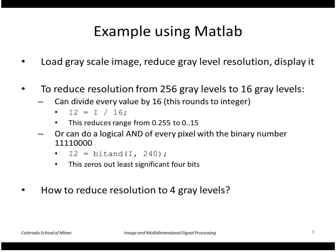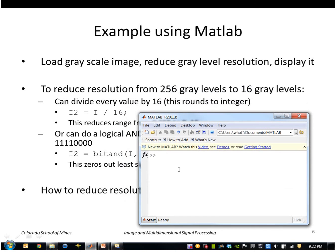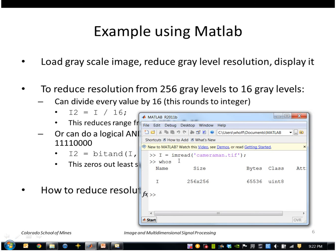I'm going to show an example of these types of operations using MATLAB. I'm going to bring in the cameraman image. The cameraman image is a 256 by 256 image, 8 bits per pixel.